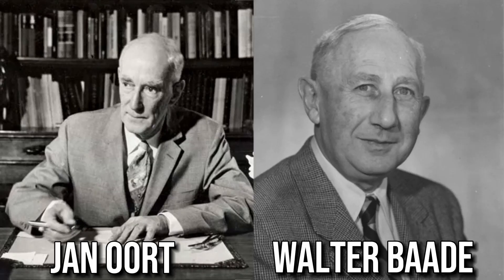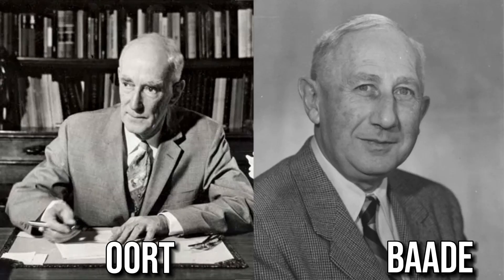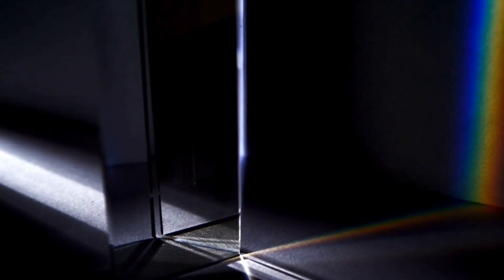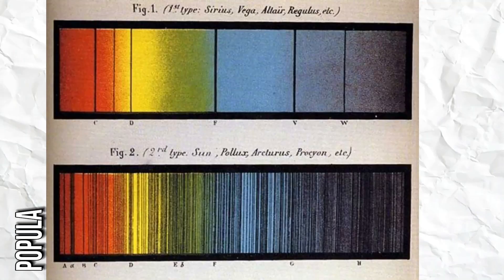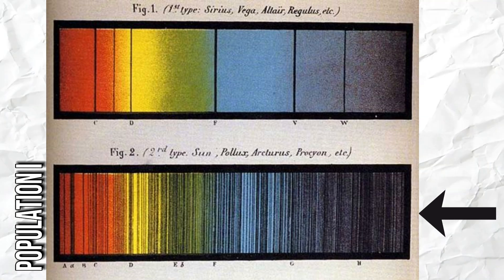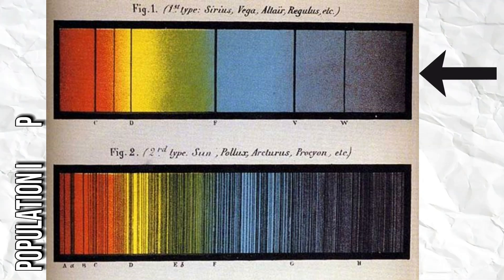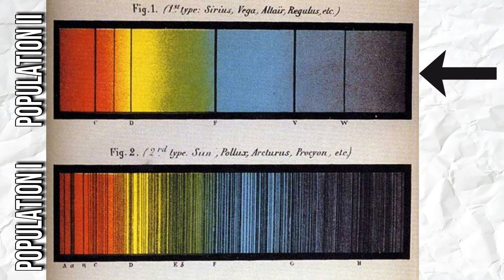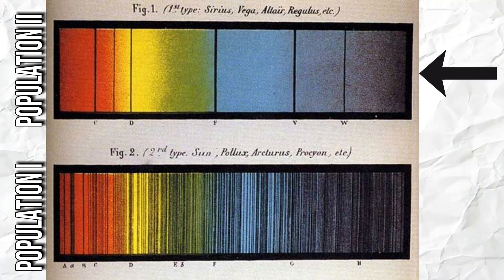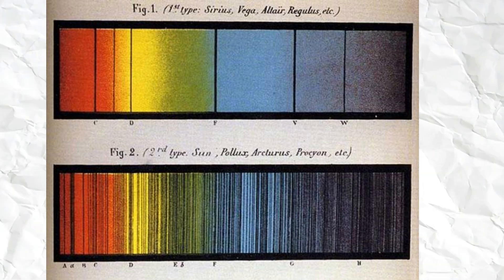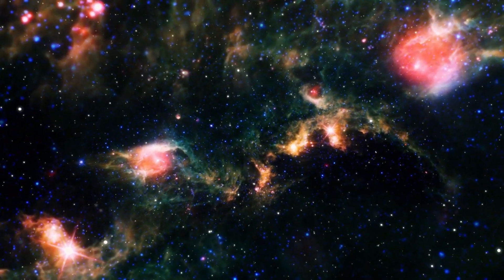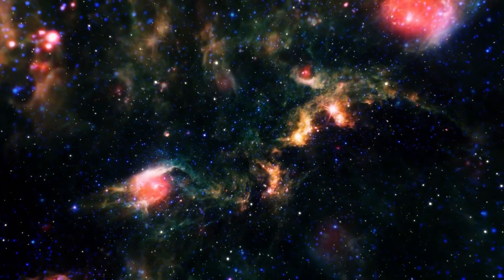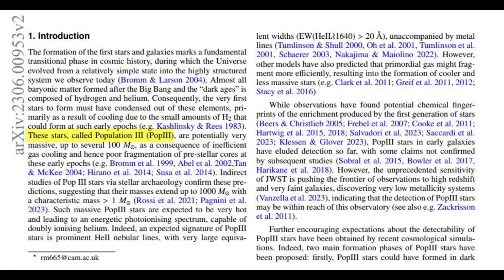In the early 20th century, astronomers like Jan Oort and Walter Baade observed missing colors in star spectra, leading to the classification of stars into two categories: Population 1 and Population 2. Population 1 stars, like our Sun, are young and rich in metals, found in the Milky Way's vicinity. Population 2 stars are metal-poor, formed from purer hydrogen and helium gas, indicating older stars, typically located towards the center of the Milky Way. When scientists began contemplating the universe's initial stars, formed from even purer hydrogen and helium gas, they continued the naming convention and designated them as Population 3 stars.